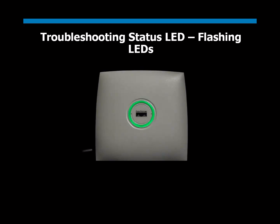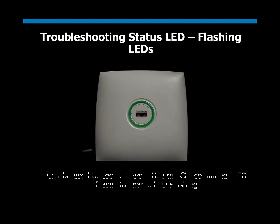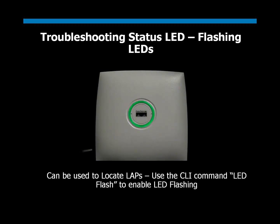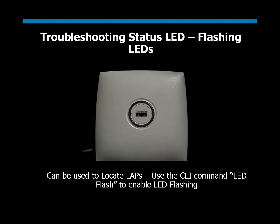Finally, there is the LED Flash feature, which can help in locating Lightweight Access Points, especially in a large wireless LAN setup. For example, with 500 or more access points, this feature flashes the status LED in dark green for a user-defined time. The command to do this is 'LED Flash' followed by the time in seconds from the CLI.